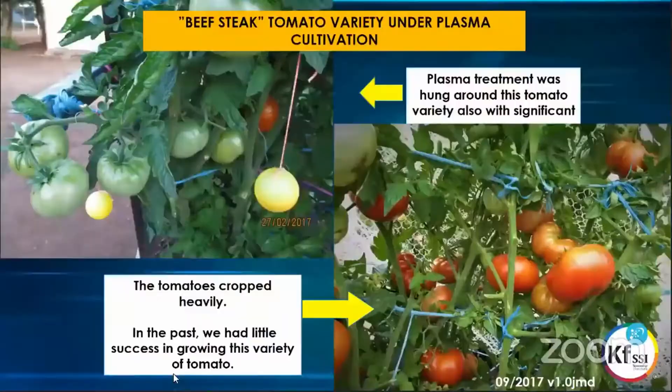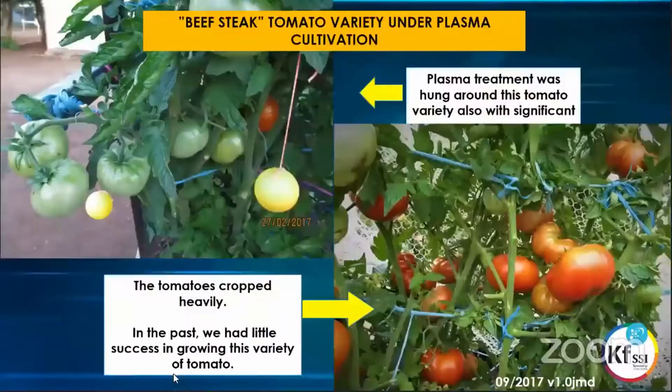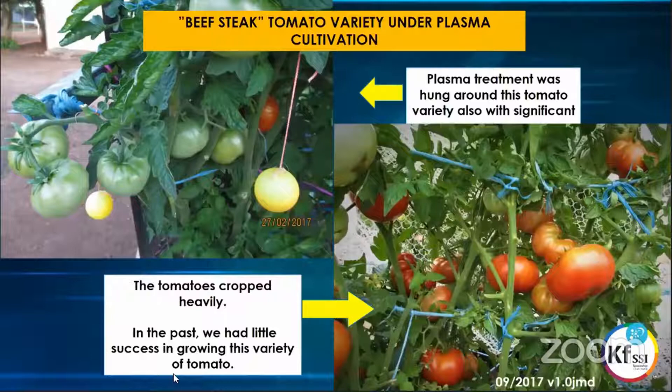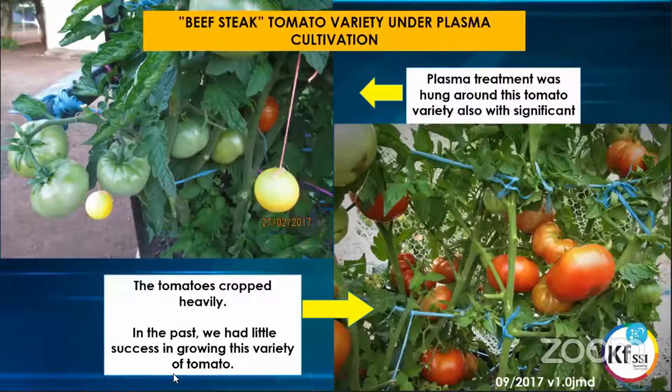He also did another variety — the beef steak tomato, also a large variety — again just hanging ping pong balls with different gradients around it to create a nice flow. He had lovely tomatoes coming through. As he said, in the past he had very little success growing this variety in that area. It just shows that by using the plasma, we're able to now start growing plants that don't generally like to grow in a certain area.